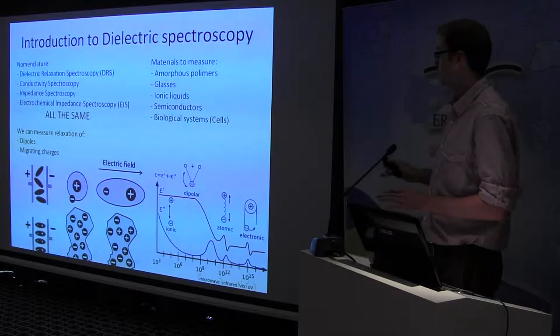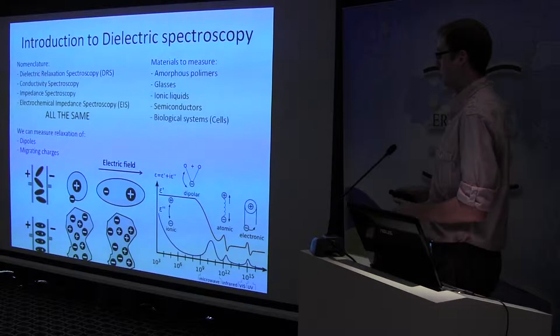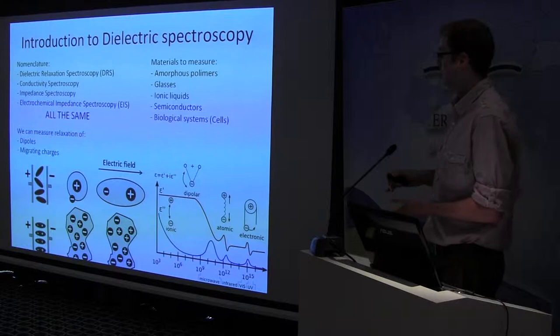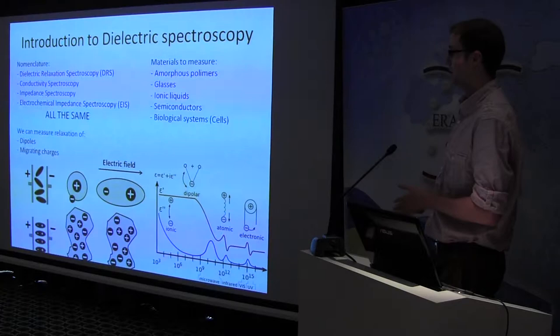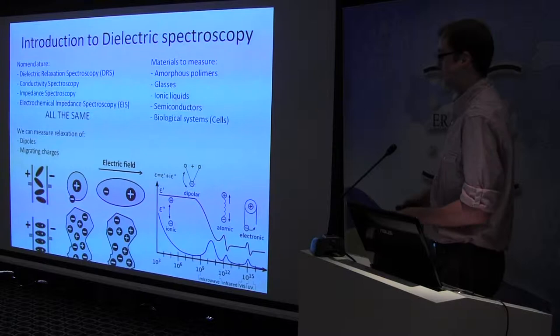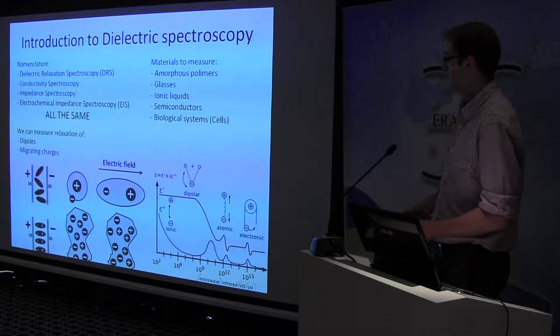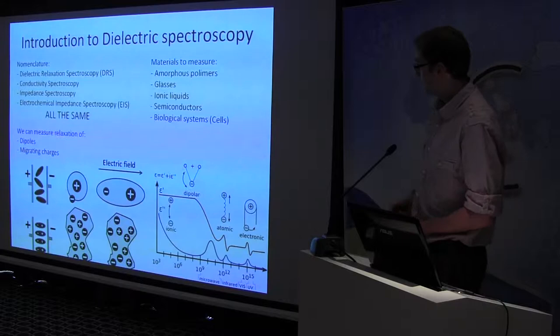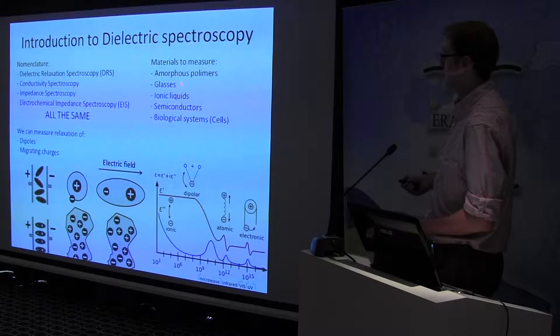Maybe some of you are not familiar with this technique, so just a few words about it. In dielectric spectroscopy, you apply an external sinusoidal voltage to polarize your sample. And then you measure the relaxation of dipoles or migrating charges in your sample. Here you can see some basic polarization processes and here you can find some materials that can be examined by this technique. For example, amorphous polymers, glasses, ionic liquids, semiconductors and even biological systems.